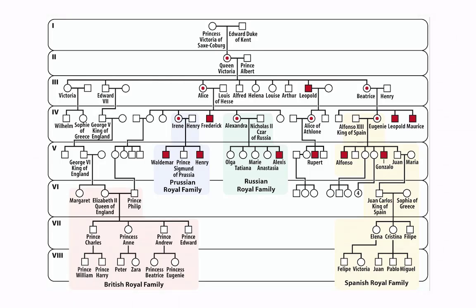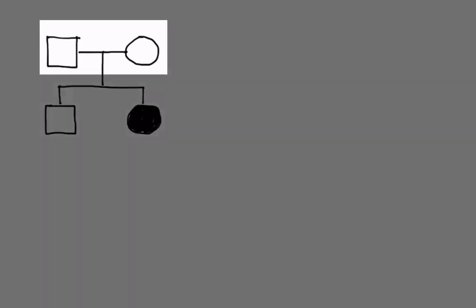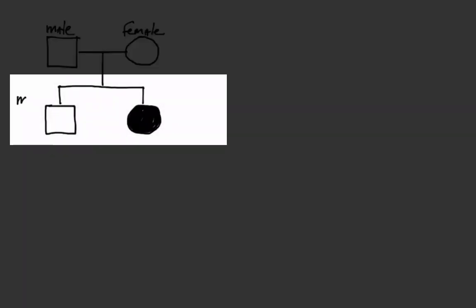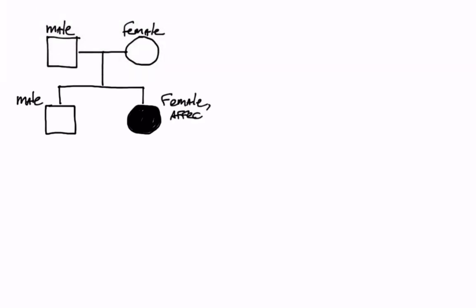In this video we will learn how to read pedigrees and to test connected hypotheses of inheritance. Pedigrees are graphical representations of families. In this example, a male represented by a square and a female represented by a circle have two children, a male and a female in order of birth. The female is affected by a condition, often a pathological one, as symbolized by a filled shape.